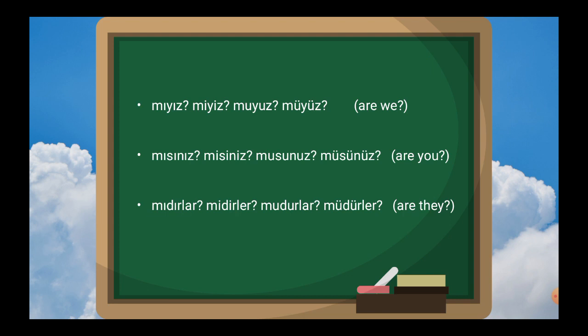For 'are they?': dırlar, dirler, durlar, dürler. That is: mı plus dırlar, mi plus dirler, mu plus durlar, mü plus dürler — giving mıdırlar, midirler, mudurlar, müdürler.